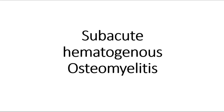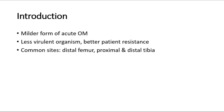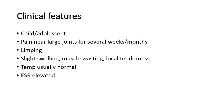Next, subacute hematogenous osteomyelitis. It is a milder form of acute osteomyelitis, characterized by a less virulent organism and better patient resistance. The common sites include the distal femur and proximal and distal tibia. Clinically, the patient is usually a child or adolescent with pain near one of the larger joints for a duration of several weeks or even months. They may have a limp and often slight swelling, muscle wasting, and local tenderness. Temperature is usually normal and there is little evidence to suggest infection. White blood count and blood culture usually show no abnormality, but the ESR is sometimes elevated.